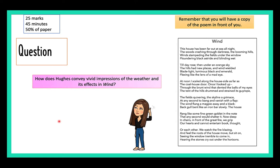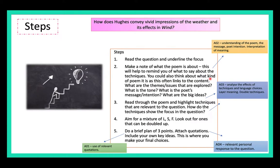This is a Ted Hughes question. The question we're looking at today is: 'How does Hughes convey vivid impressions of the weather and its effects in Wind?' Remember you will get a copy of the poem in your exam, so make use of that — read it, make notes, annotate. There are various steps I recommend to make sure you cover everything and that your final response is ordered, coherent, with a relevant and detailed personal response.